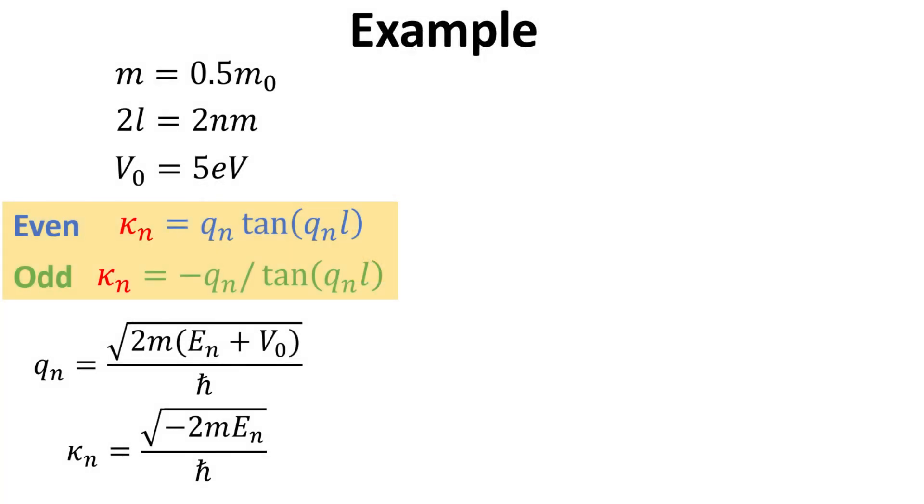Now, we are ready to solve the eigenenergies of our confined states. Let's consider a particular case with mass equals to 0.5m0, a well width of 2 nm, and a potential well depth of 5 eV. We need to solve the transcendental equations as highlighted.